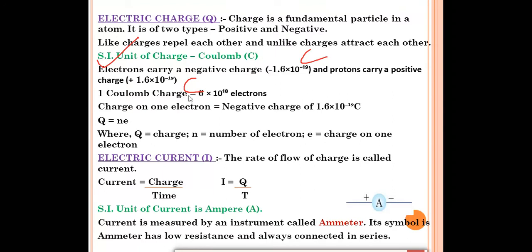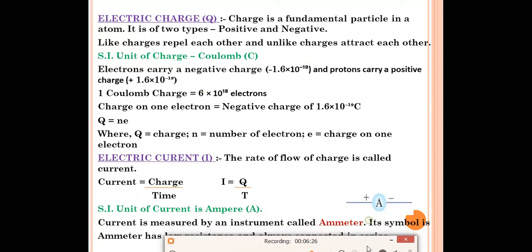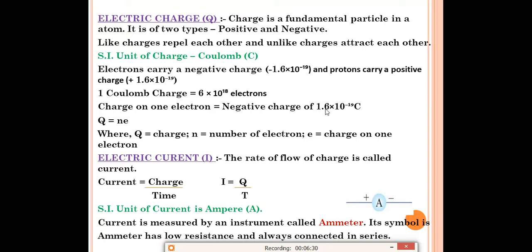One coulomb equals 6 × 10¹⁸ electrons. The charge on one electron is −1.6 × 10⁻¹⁹ coulomb. One formula here is Q = NE, where N is the number of electrons and E is the charge on one electron. For example, for 10 electrons: Q = 10 × 1.6 × 10⁻¹⁹. Remember the SI unit of charge is coulomb and the formula Q = NE.